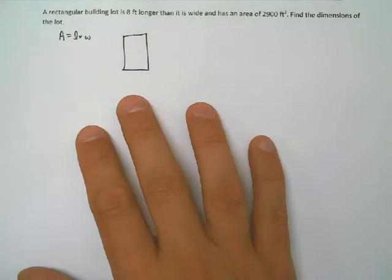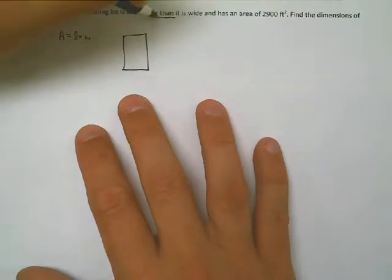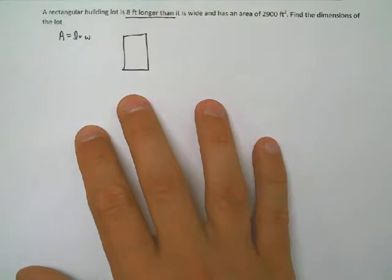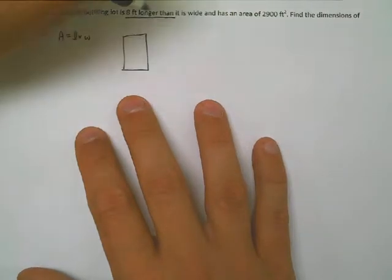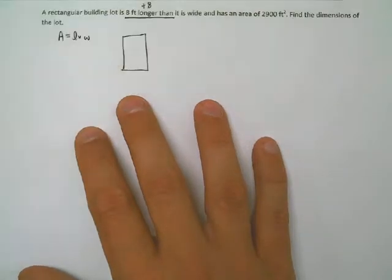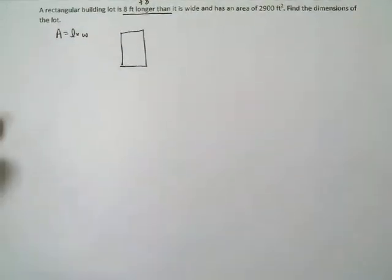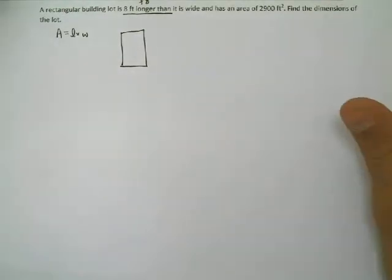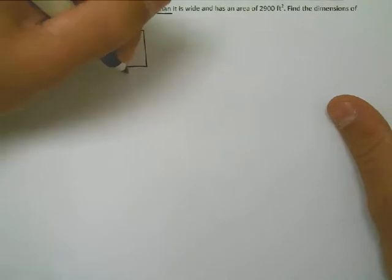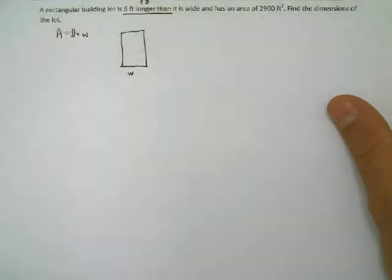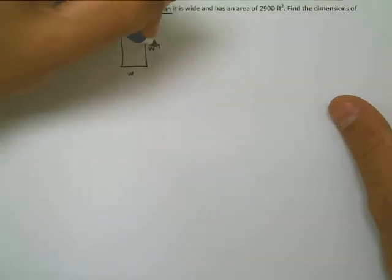It's 8 feet longer than, which means we're going to have a plus 8 show up somewhere in our equation, not 8 times. That would be 8 times as long as, but we're saying 8 feet longer than it is wide. So if we draw a picture here, let's let W stand for the width. That means that the length would be W and then 8 more than that, right?